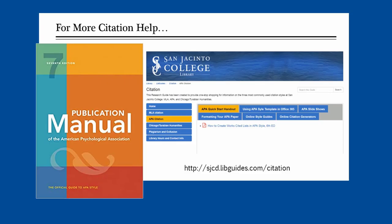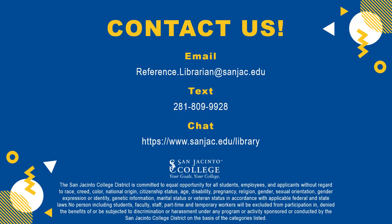For more citation help, see the Publication Manual of the American Psychological Association, 7th edition, at any library reference desk or on reserve at your campus library. Also, check out our citation research guide. San Jacinto College librarians are always willing to help – just ask a librarian!